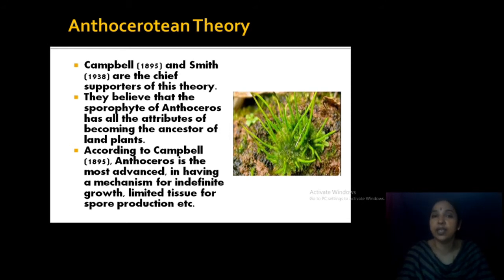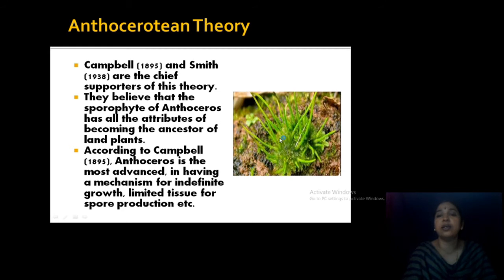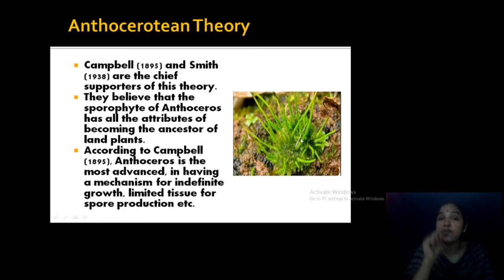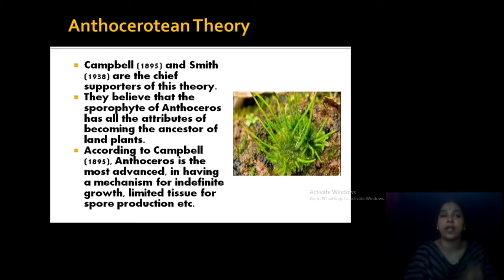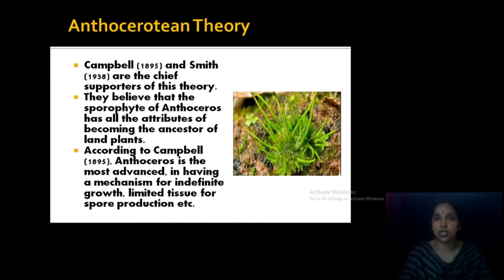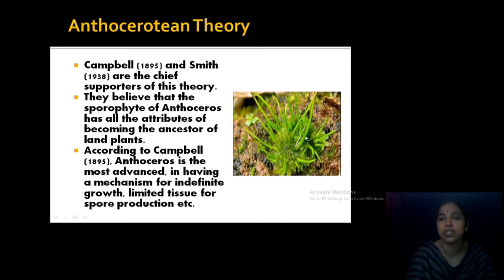In that session you also studied that Anthoceros is a highly advanced, highly evolved bryophyte. You can see the sporophyte — a horn-like structure — it is also known as hornwort. This horn-like structure is the sporophyte, having a central section. This theory is supported by Campbell and Smith, two important scientists. They believe that the sporophyte of Anthoceros has all the characters needed to become land plants. This is the structure of the sporophyte — while in its section you can see some sterilized tissue and erect structure development.